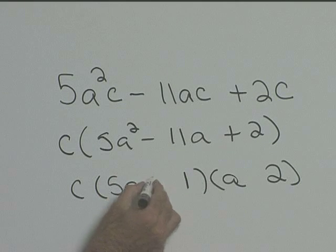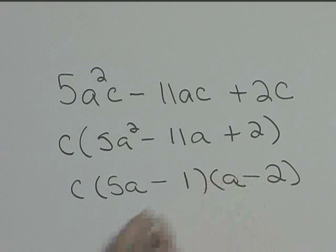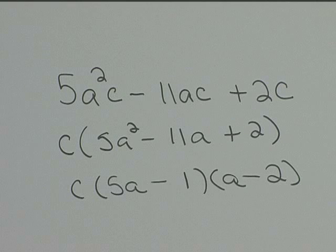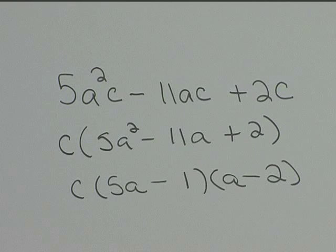Those will add to 11a, but we want it negative, so we need to make both of these negative. Notice that our last term is positive 2. So factoring, we get c(5a - 1)(a - 2).